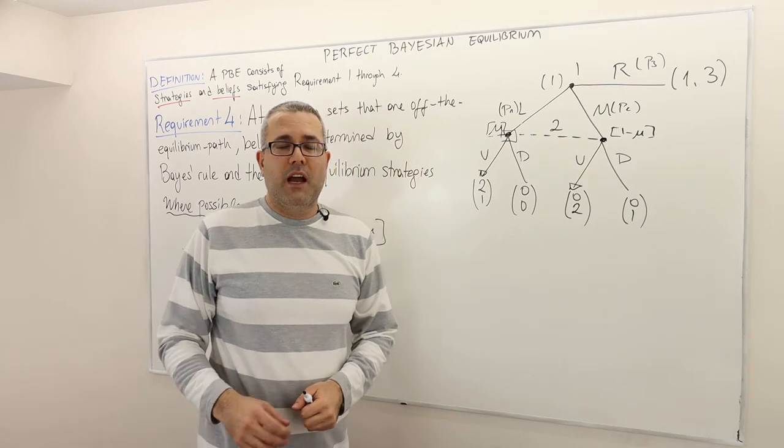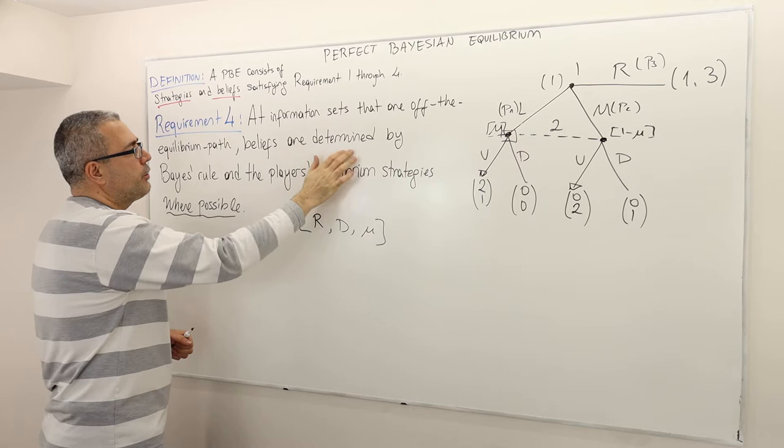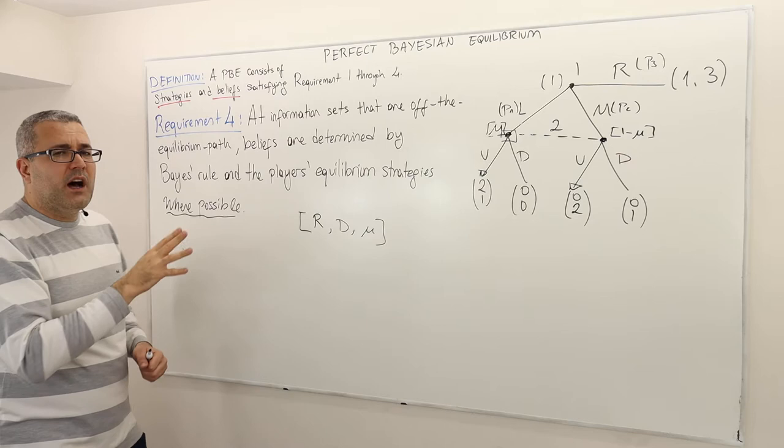Hello guys, this is the fourth and last requirement. So what does it say? It says: at information sets that are off the equilibrium path, beliefs are determined by Bayes' rule and the player's equilibrium strategies where possible, or whenever possible. So this 'whenever possible' part is a bit confusing, so let me give you two examples.